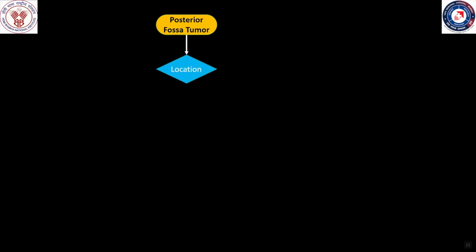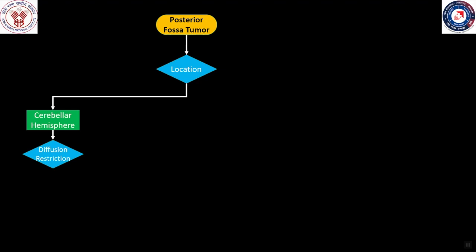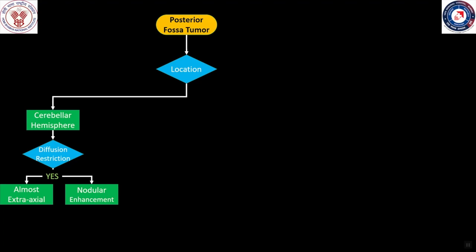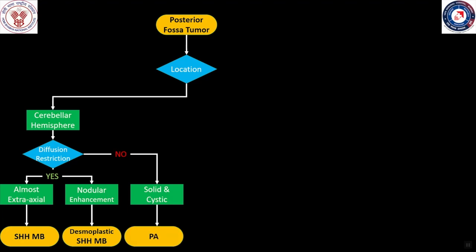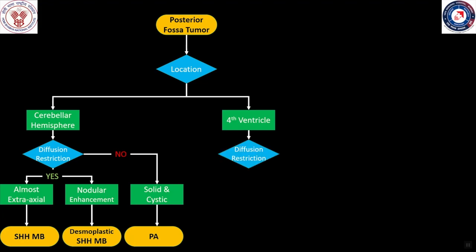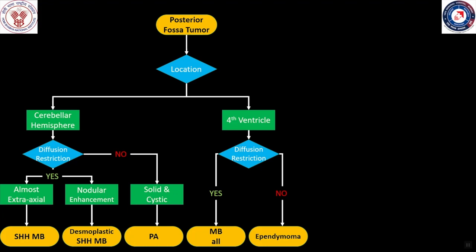To conclude, here is an algorithmic approach for posterior fossa neoplasms helpful in narrowing the differential diagnosis. First, look at the location of the tumor. If the tumor is cerebellar in location, assess diffusion characteristics. If restricted diffusion is present and the tumor is located in the cerebellar hemisphere and is surfacing or has nodular post-contrast enhancement, SHH subgroup of medulloblastoma can be considered. If there is no restricted diffusion and the tumor shows a cystic lesion with a mural nodule, pilocytic astrocytoma is favored. If the tumor is in the fourth ventricle with restricted diffusion, Group 3 or Group 4 medulloblastoma is likely; without restricted diffusion, ependymoma is more probable.